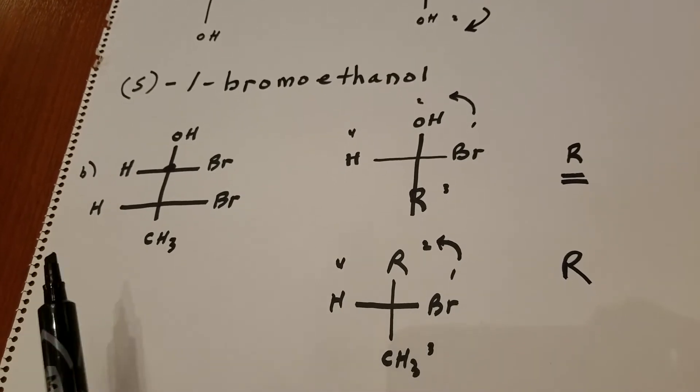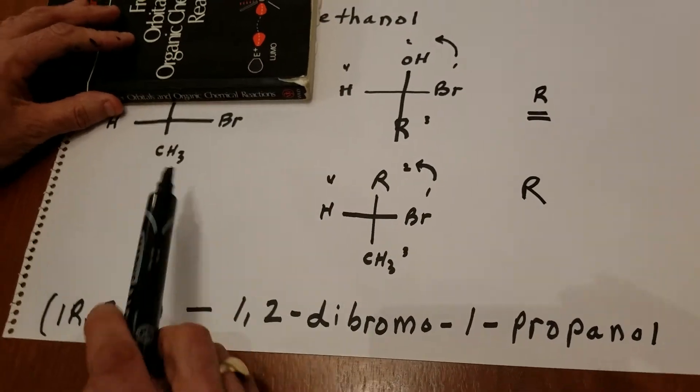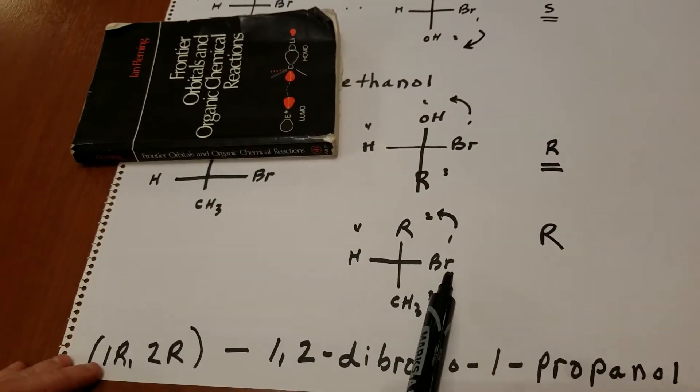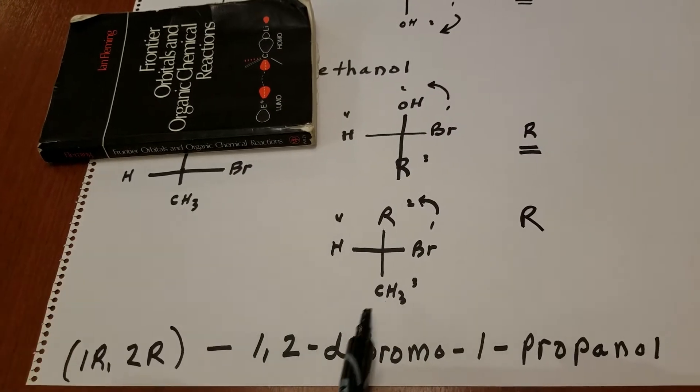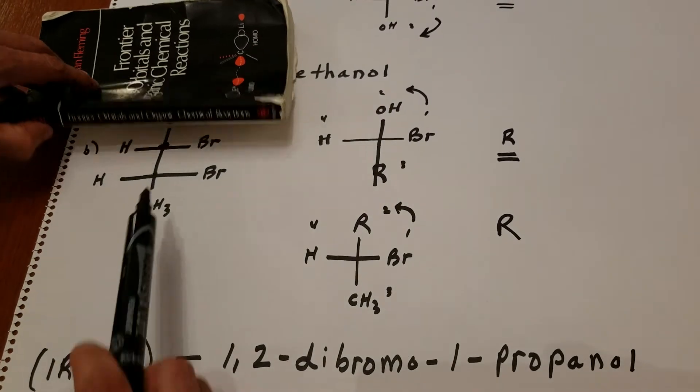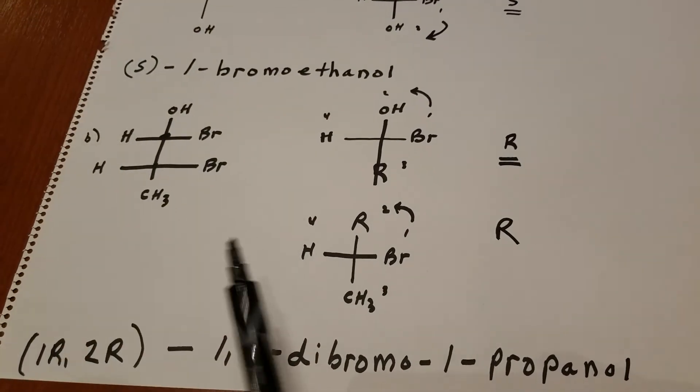We now do the same thing to the second center of chirality. I cover up the top. The bromine, as you can see, is to the right of me. H is to the left. Methyl is underneath, and above me is the big R group, which is just a carbon bonded to a bromine.